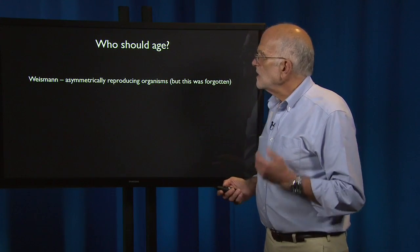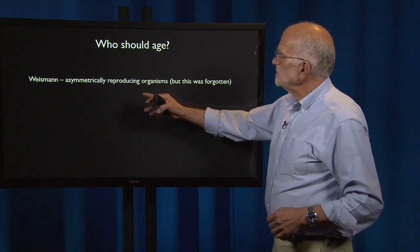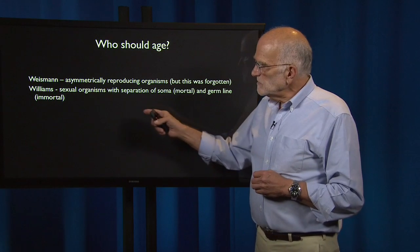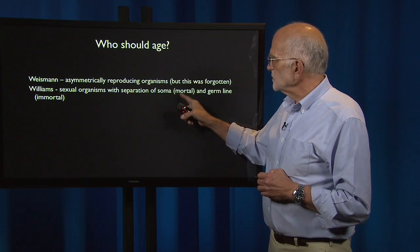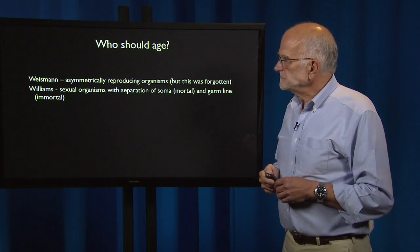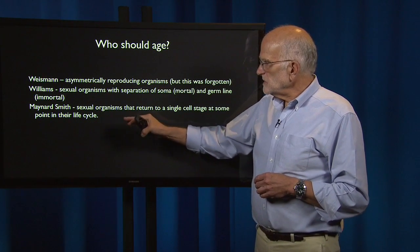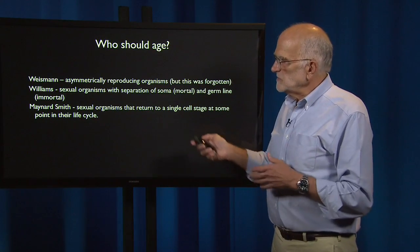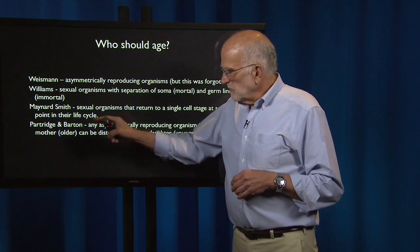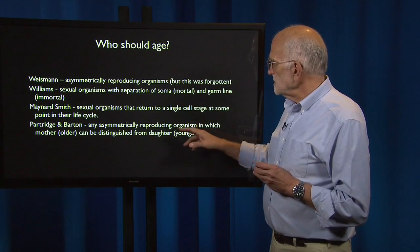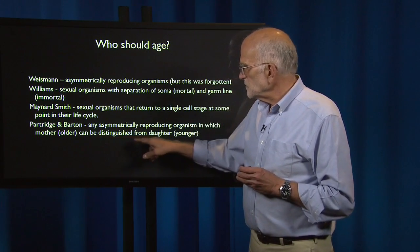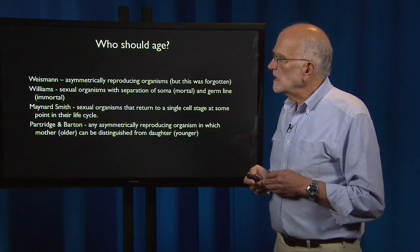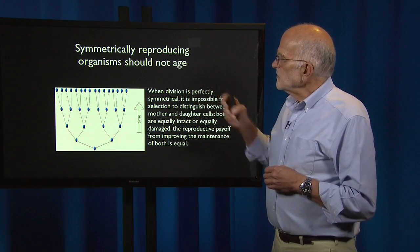Who should age? Auguste Weissmann saw back in 1882 that asymmetrically reproducing organisms are the ones that should age, but that was forgotten. George Williams suggested that sexual organisms with a separation of soma — which was mortal — from germline — which was immortal — were the ones that should age. John Maynard Smith extended that to plants, saying sexual organisms that return to a single cell stage at some point in their life cycle should age, which also happens in plants, and plants do senesce. Then Linda Partridge and Nick Barton noted that any asymmetrically reproducing organism in which the mother, which is older, can be distinguished from the daughter, which is younger, should age — a rediscovery of Weissmann's idea. It is symmetrically reproducing organisms that should not age.